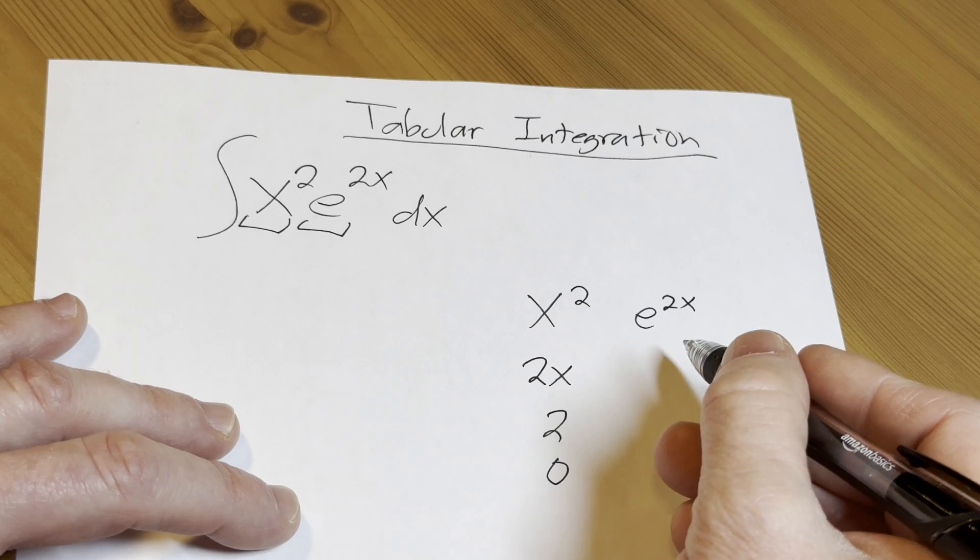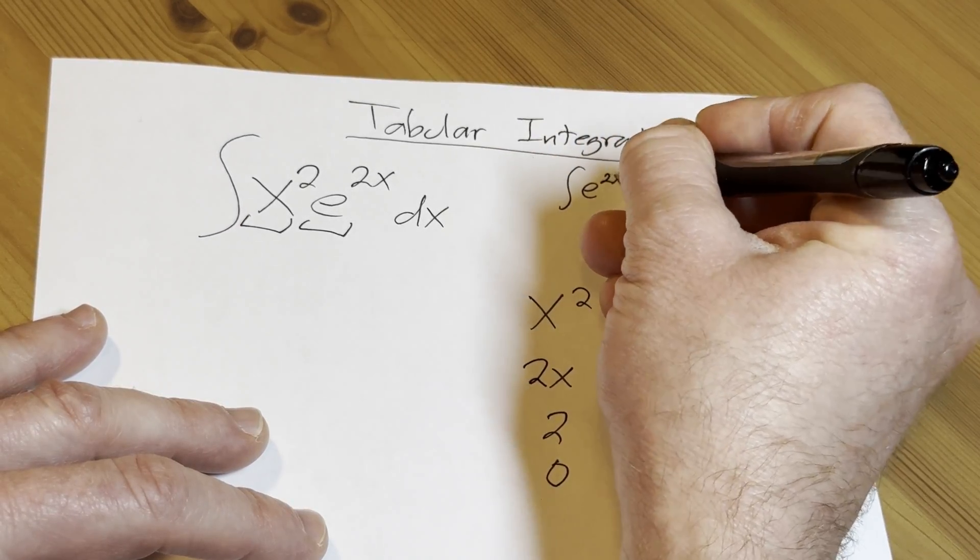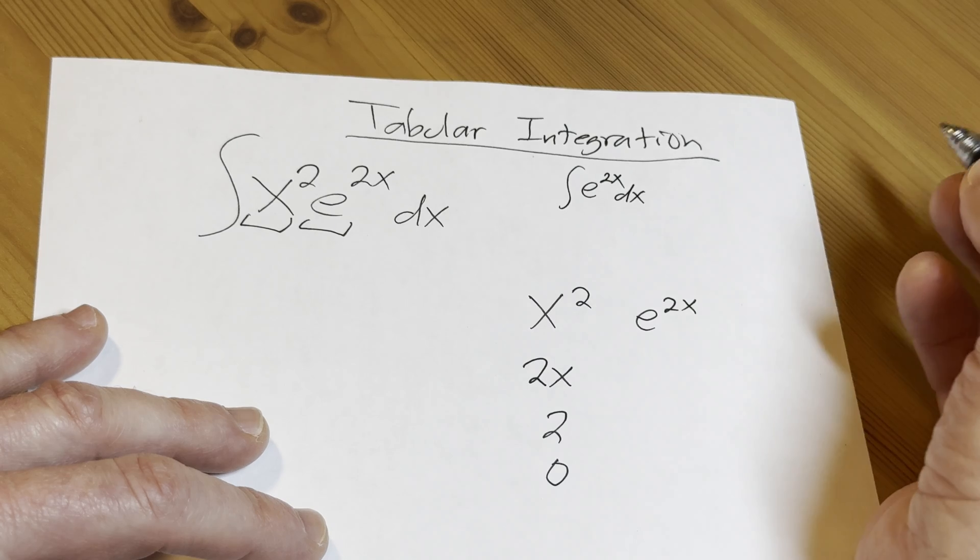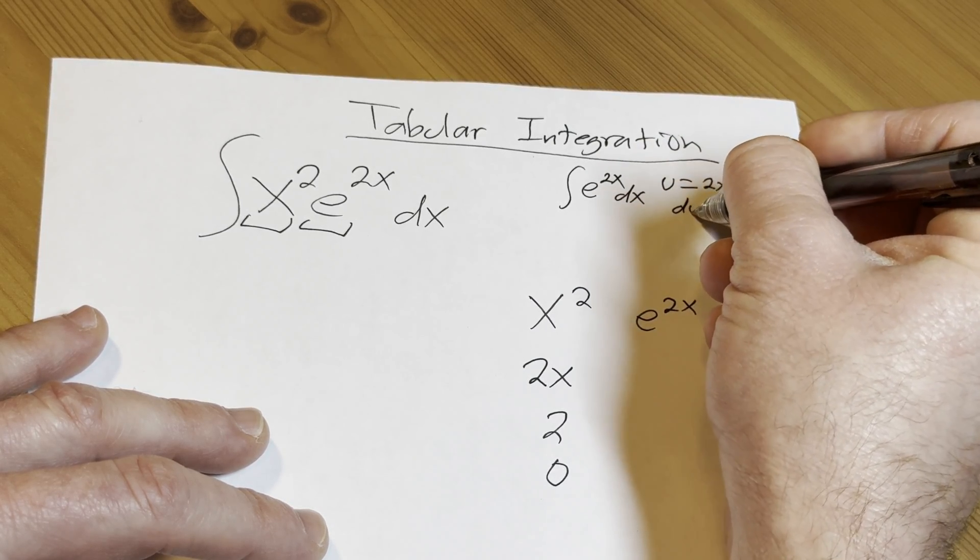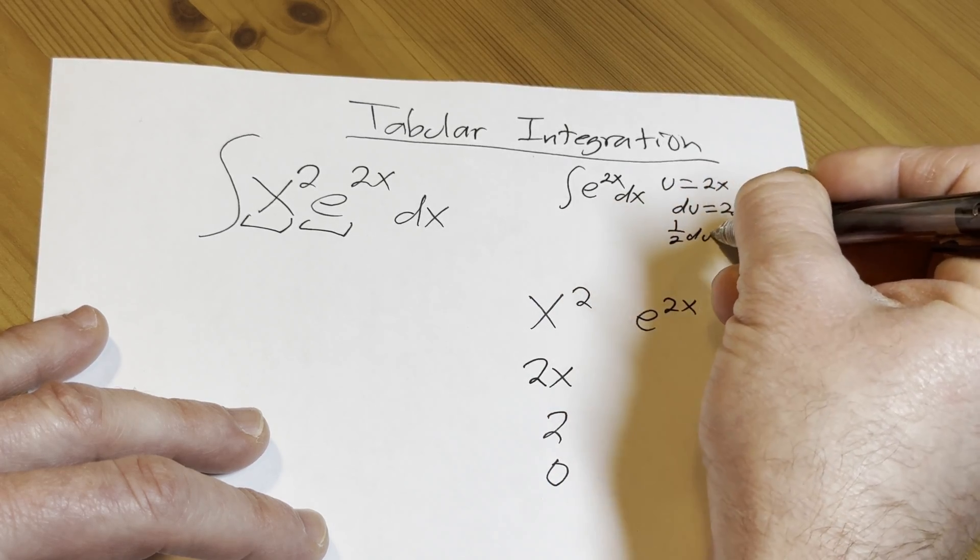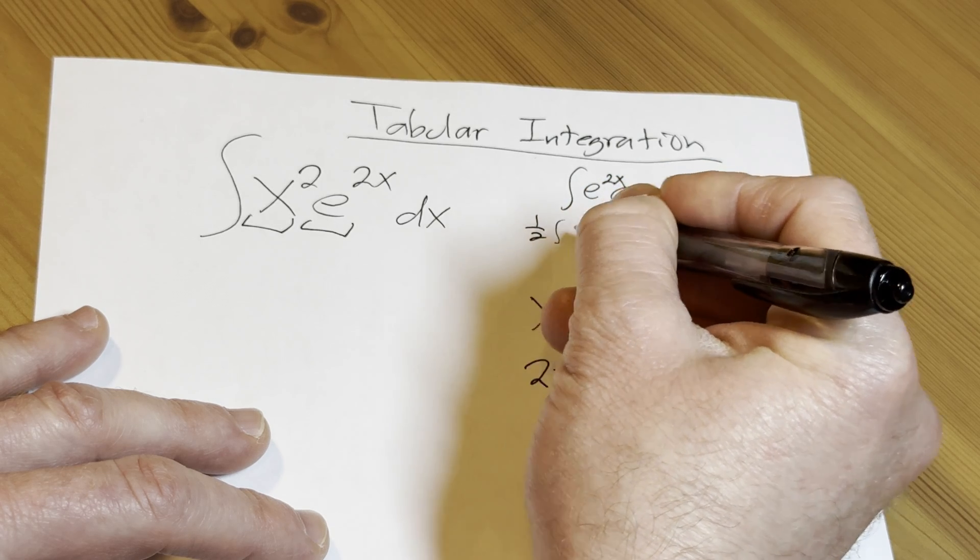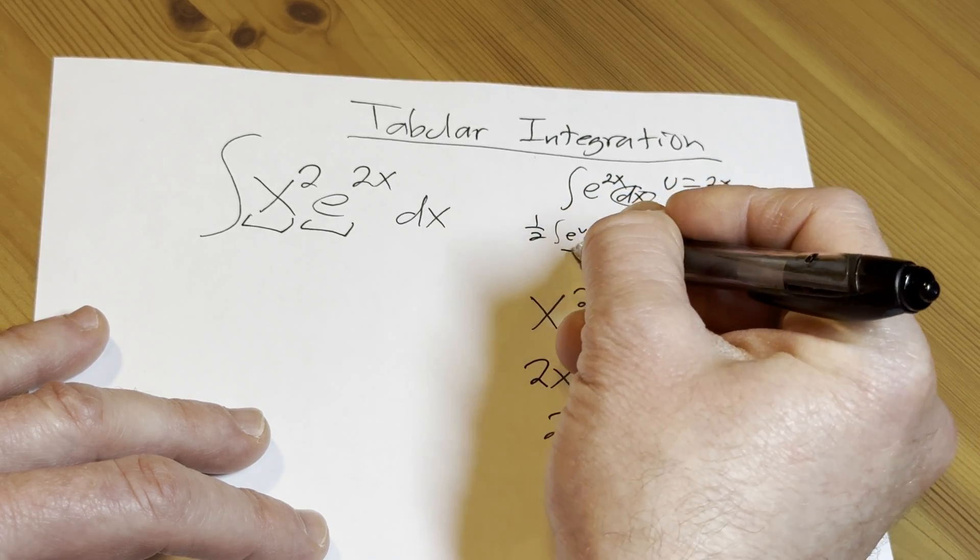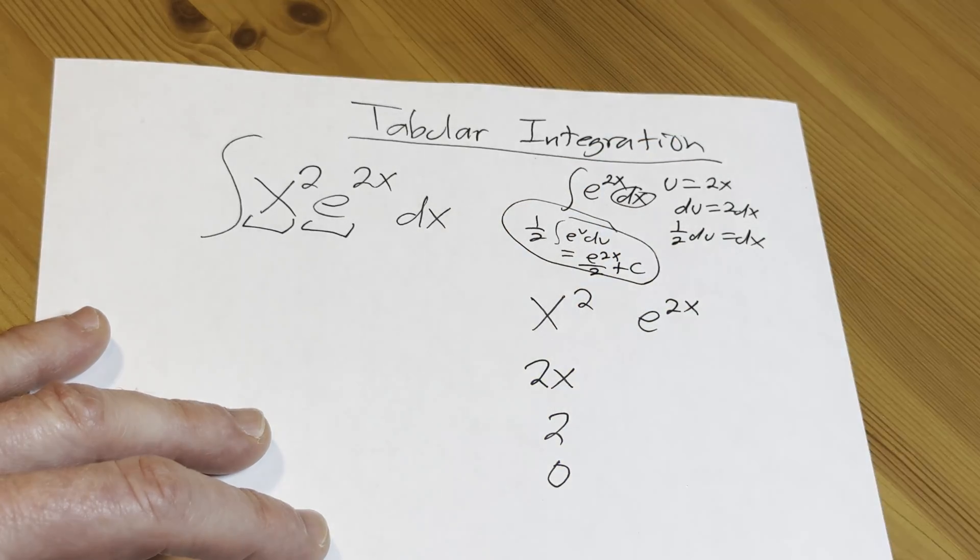Here you're integrating e to the 2x. This is a really easy integral, and if you actually had to go through it and do it every time, you would make a u substitution. You would let u equal 2x, so then du is 2dx, and then you divide by 2, so one half du is dx. Then you make the substitution, so your dx becomes one half du, and you get e to the u du, and you end up with e to the 2x over 2 plus a constant.